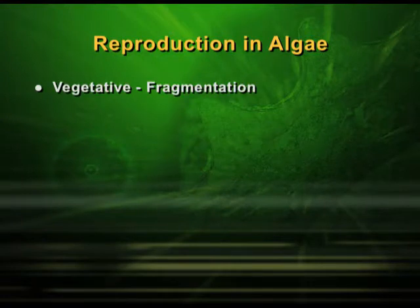Now let us understand how reproduction takes place in algae. Algae by nature are simple structures, so vegetative reproduction can take place by simple fragmentation. In algae we find vegetative reproduction, asexual reproduction, and also sexual reproduction. Being simple in nature, it can be vegetative by fragmentation — means if a small part of algae breaks out from the parent body, it will develop into full algae. This is a simple regeneration kind of situation.